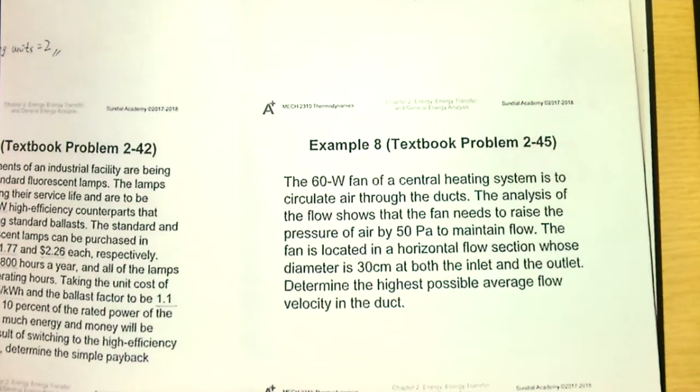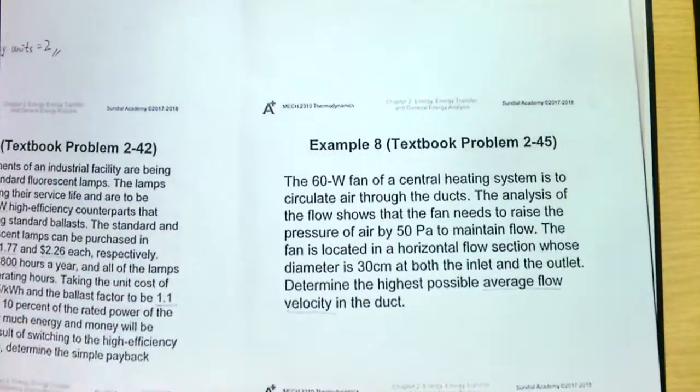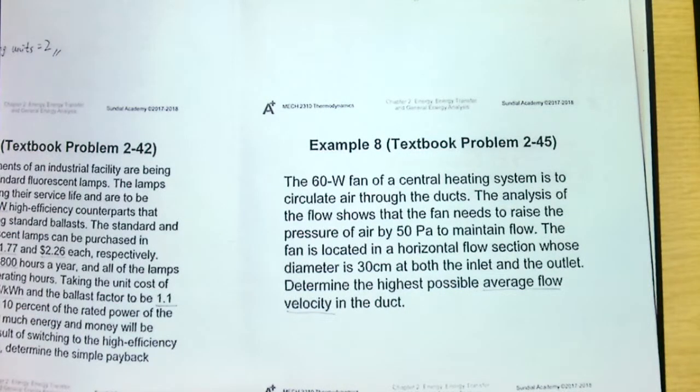And the fan is located in a horizontal flow section whose diameter is 30 cm at both the inlet and the outlet. And we need to determine what is the highest possible average flow velocity. Here I need to highlight something: that is the average flow velocity.